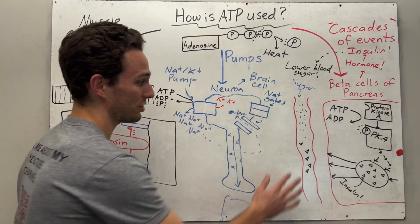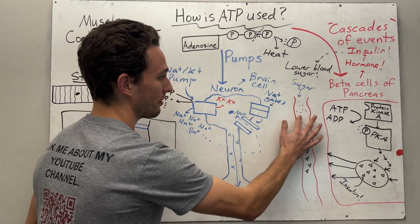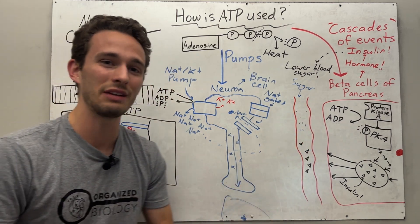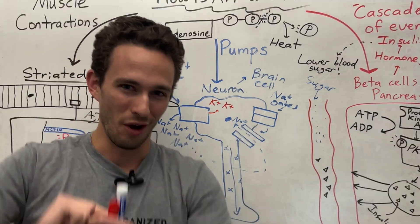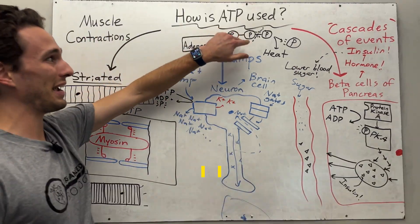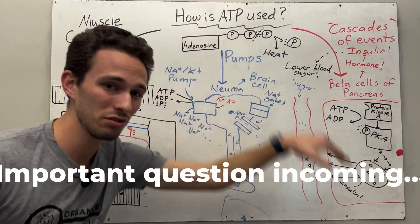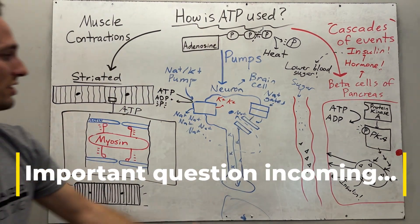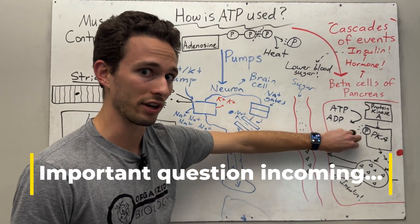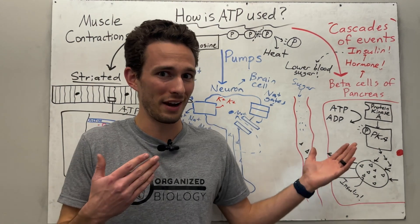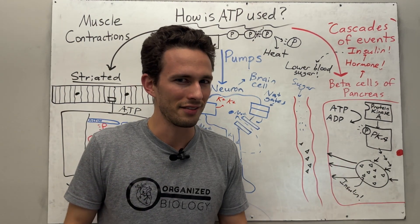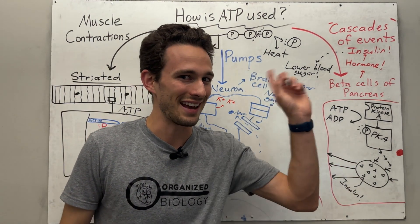By releasing insulin into the bloodstream, we can lower blood sugar levels to a normal level once again — achieving what's called homeostasis, the balance of your body. So this is how ATP is used in muscle contractions, in your brain, and in the beta cells of the pancreas. ATP is such an important molecule. How do we make it in our cells? That's coming up in the next video.